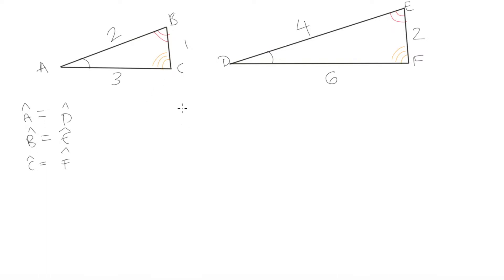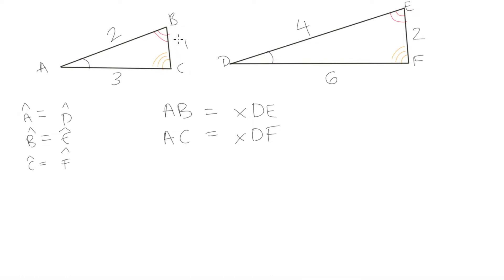So what that means is: side AB equals side DE multiplied by some factor X, so X times DE gives us AB. Side AC is equal to side DF multiplied by the same factor X. Side BC is equal to side EF multiplied by that same factor X. It has to be the same factor in each case in order for us to have similar triangles.